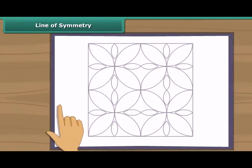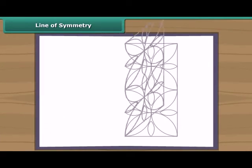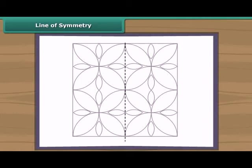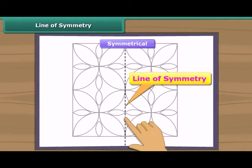Let's take this figure now. When we fold this figure from the center, we will see that the two parts of this figure are coinciding. So we will see that this figure is symmetrical and this line is the line of symmetry.